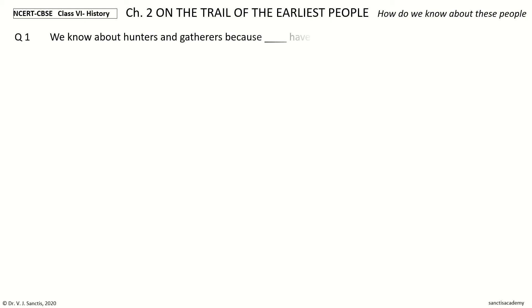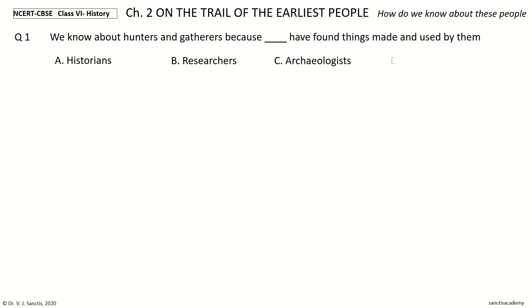We know about hunters and gatherers because ___ have found things made and used by them. The options: historians, researchers, archaeologists, all of the above. Your time to choose. And the answer is archaeologists.